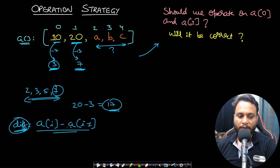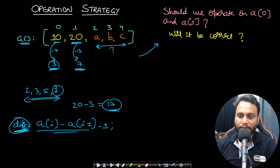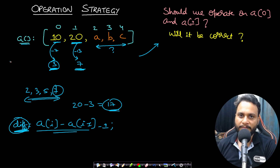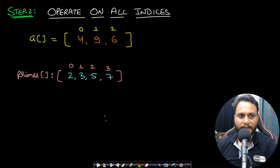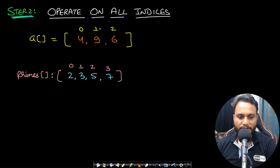To summarize the greedy strategy: for each element, compute diff = current element − previous reduced element, then find the largest prime less than or equal to diff − 1 and subtract it. This is always correct and optimal — it's our greedy approach. In step 2 we operate on all indices to reduce them and make the array strictly increasing.